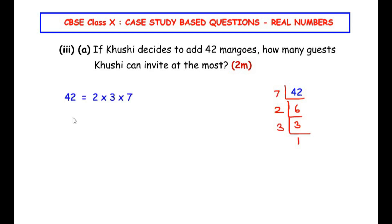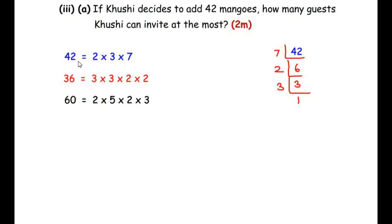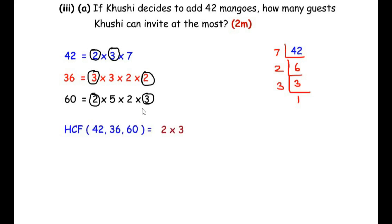Writing down all three factorizations, we circle the terms common to all three numbers. 2 is present in 42, 36, and 60. 3 is also present in all three. There are no other common factors. So the HCF = 2 × 3 = 6. Therefore, Khushi can invite a maximum of 6 guests if she adds 42 mangoes.